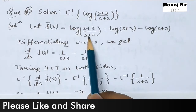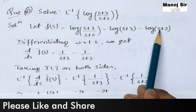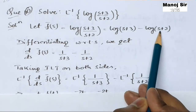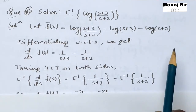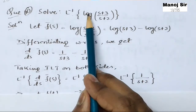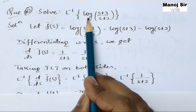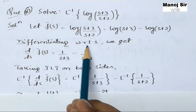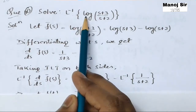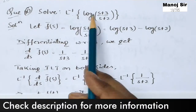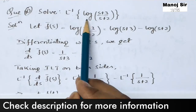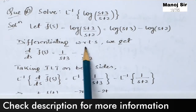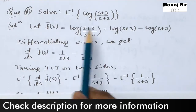We know that log(a/b) can be written as log(a) minus log(b), so this can be written as log(s+3) minus log(s+2). Whenever you see a log form question, you need to differentiate. We need to differentiate every time whenever you see this log type of question. So we differentiate with respect to s on both sides.